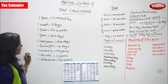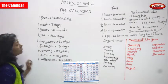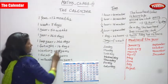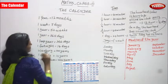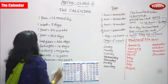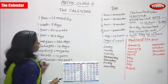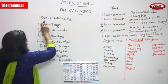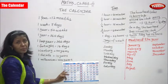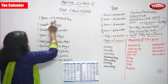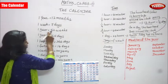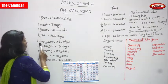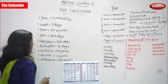Now we are going to move on to the topic of the calendar. One year is equal to 12 months. One week is equal to seven days. One year is equal to 52 weeks. One year is equal to 365 days. One leap year is equal to 366 days.